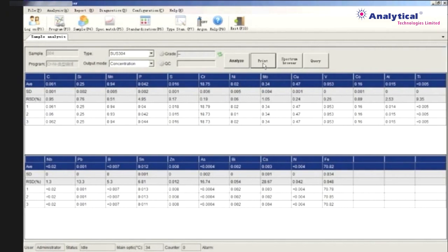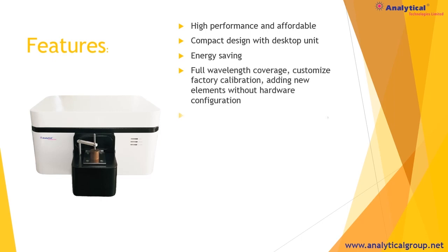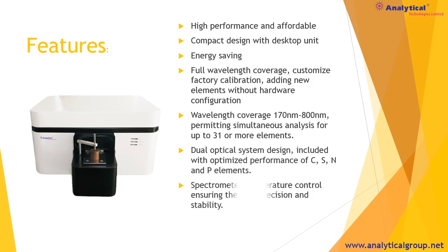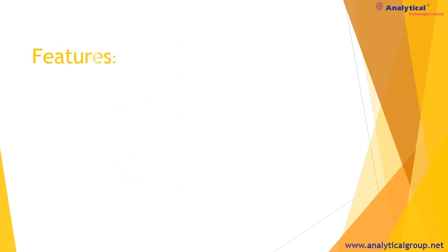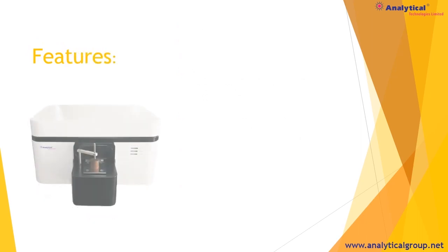You can then print out the results. The OES has many features, including a wavelength range of 170 to 800 nm, which covers major elements like carbon, sulfur, nitrogen, phosphorus, and many more.